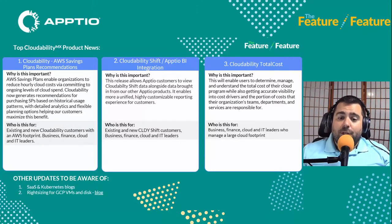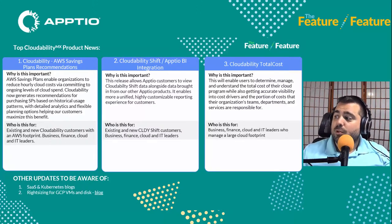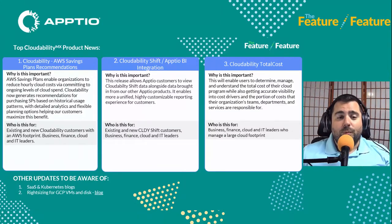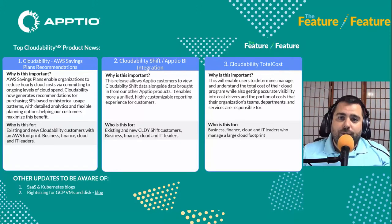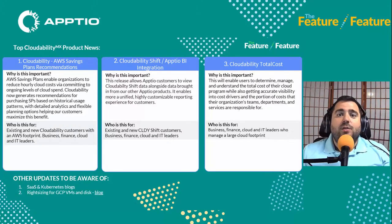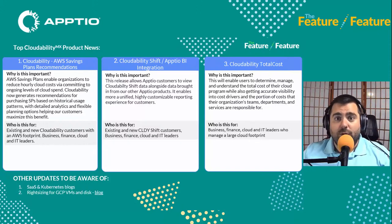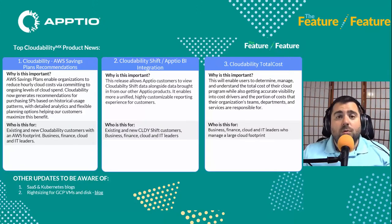Cloudability Total Cost is also being released. It enables users to determine, manage, and understand the total cost of their cloud program while getting accurate visibility into cost drivers and the portion of costs that their organizations, teams, departments, and services are responsible for. Essentially, it's a new product release for Cloudability — it's not just surfacing information for the three major cloud platforms; it also includes information from ancillary products and other applications like Datadog, with over a dozen included. It also incorporates operational costs like labor, and other cloud platforms like Oracle and IBM.